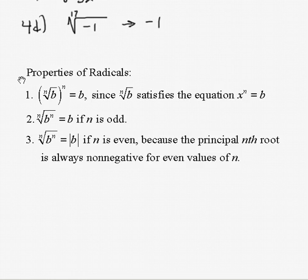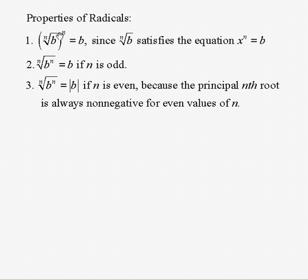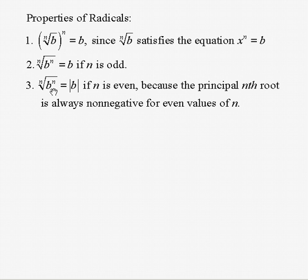Some properties of radicals: if you have the nth root of b and raise it to the nth power, you get the radicand b itself, since the nth root of b satisfies the equation x to the n equals b. So the square root of 2 squared equals 2, and the cube root of 8 cubed equals 8. If you raise b to the nth power first and then take the root, you also get b when n is odd. However, if n is even, we take the absolute value of the base to guarantee we get the principal, non-negative root.